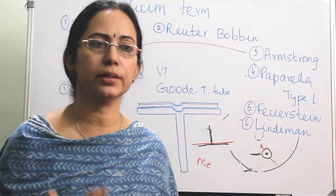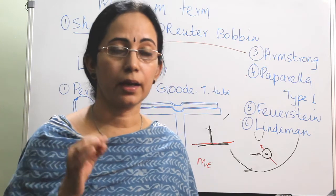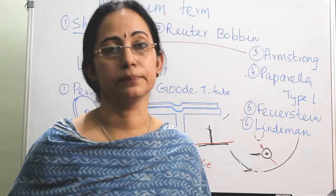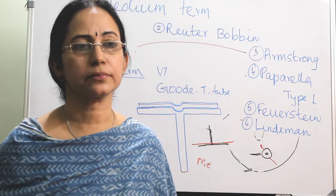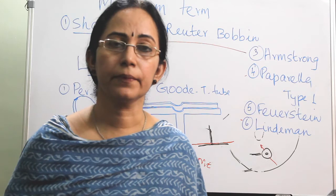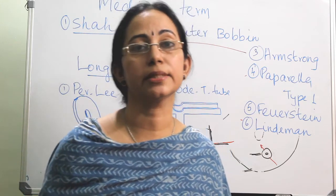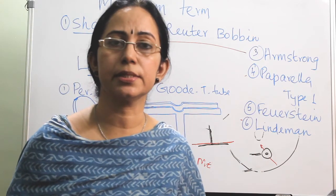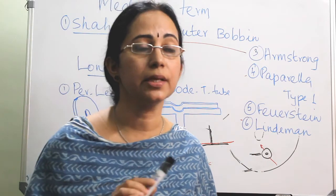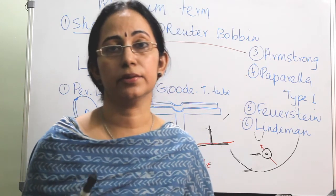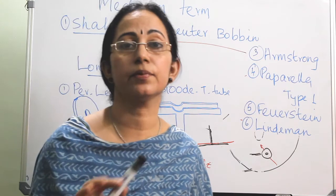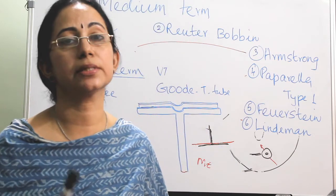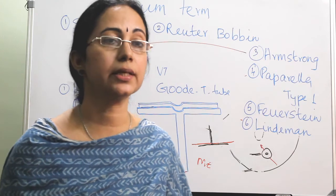How can you know the tube is blocked? Upon introduction the child will be symptomatically much better, but after a while the symptoms recur. If you perform a tympanogram you will again get a B curve. When the tube is in situ without blockage, the tympanogram will show a flat or straight curve. If you are getting a B curve again, that means the ventilation tube is blocked, and in that case you have to remove it.